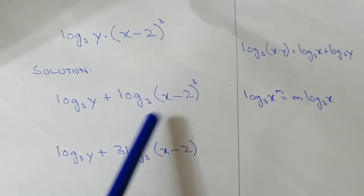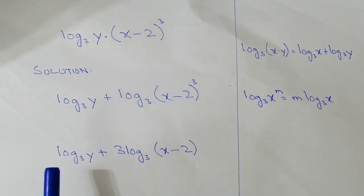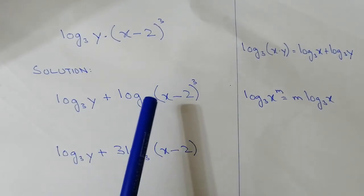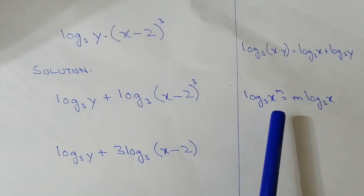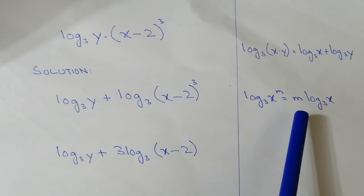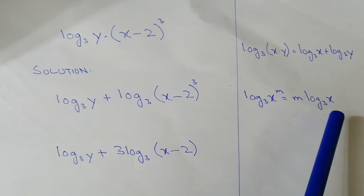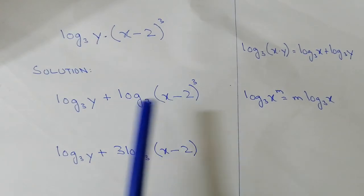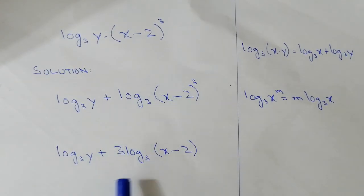And another property that we are using: now here we are using that property log(x^m) = m log x. We bring that power m on the left-hand side. So here we bring that power 3 on the left-hand side, so 3log₃(x-2).